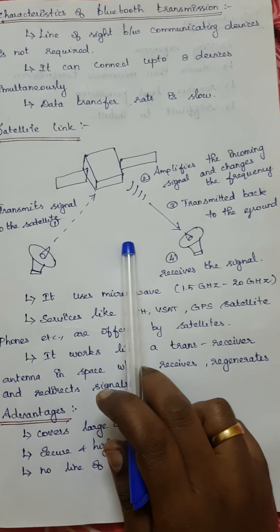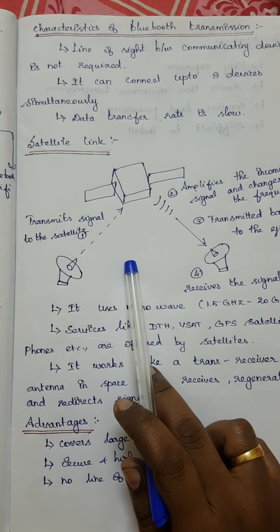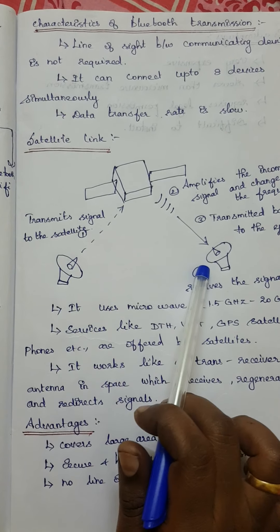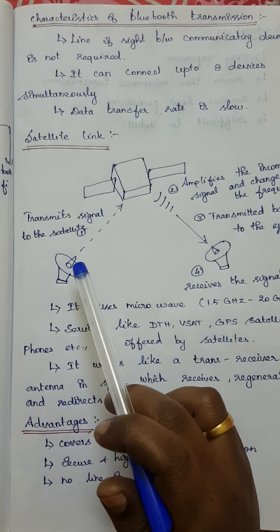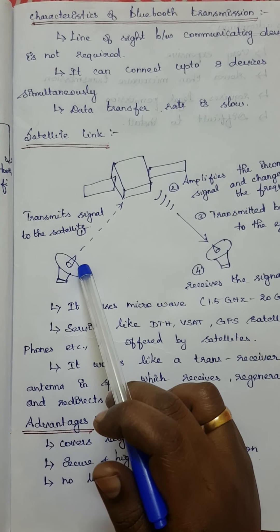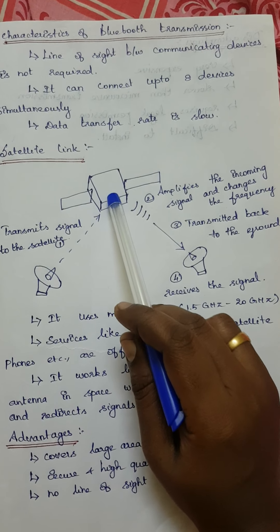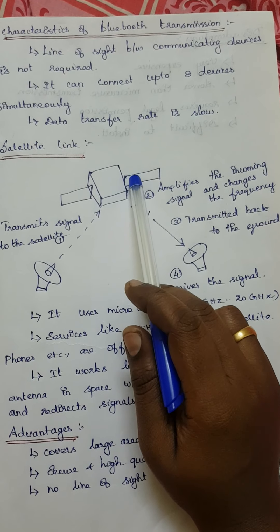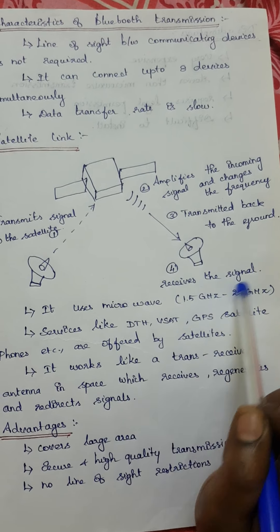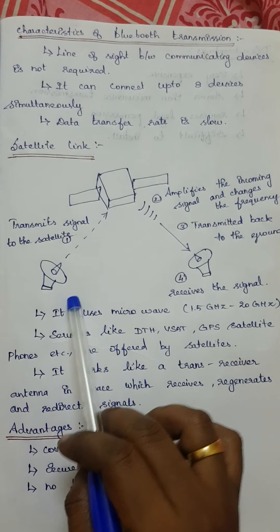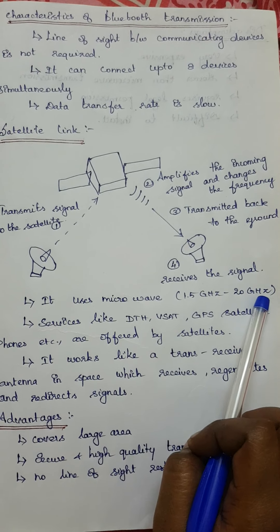Now we will look at the satellite link using a simple diagram. The two antennas are ground equipment which connect to the satellite. First, a signal is transmitted from the ground equipment up to the satellite. The satellite receives the signal, amplifies it, changes its frequency, and then transmits it back to the ground equipment. Satellites use microwaves, with a frequency range of 1 GHz to 20 GHz.